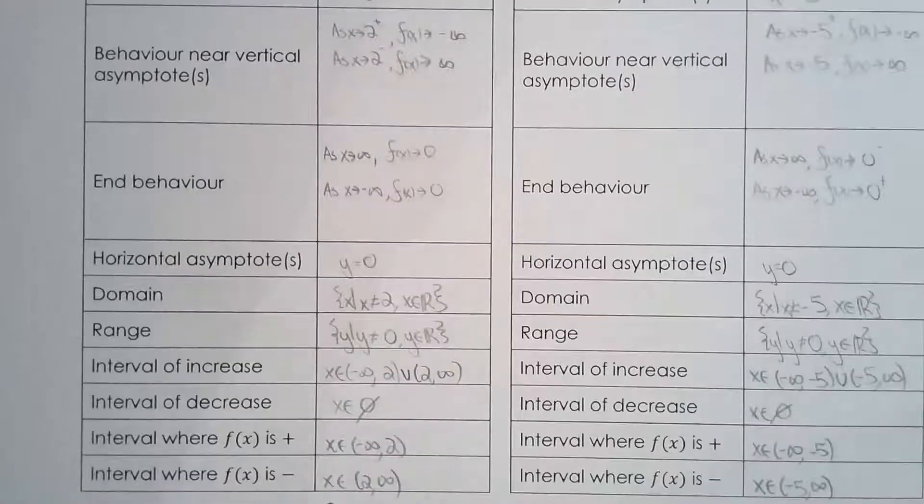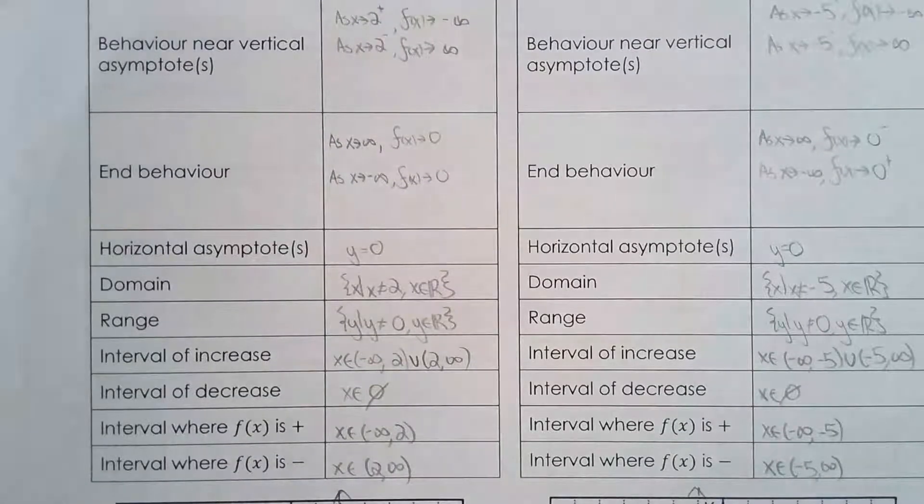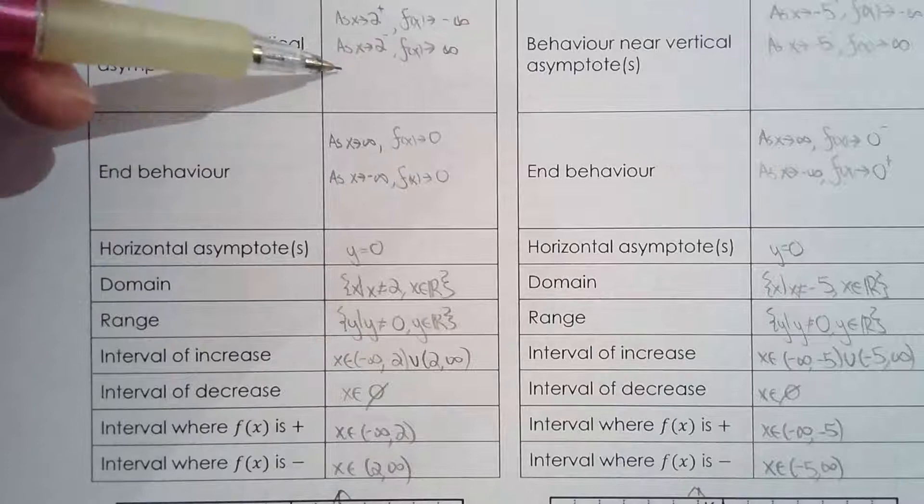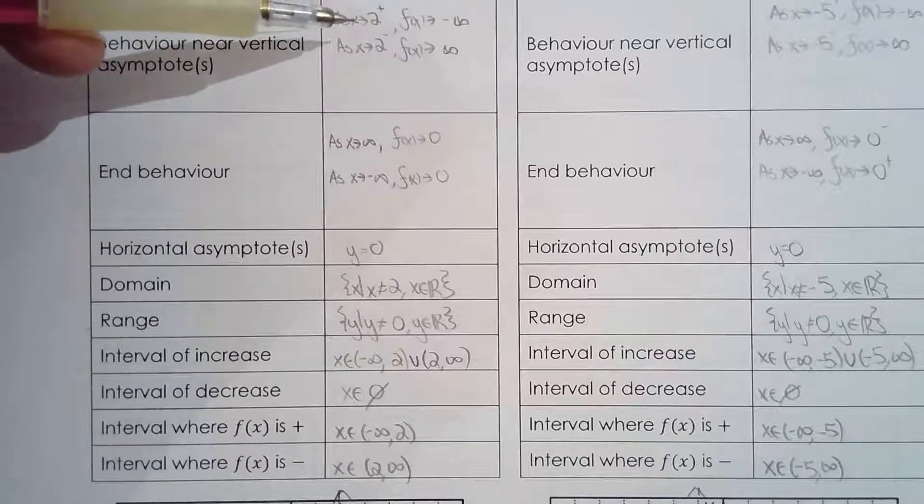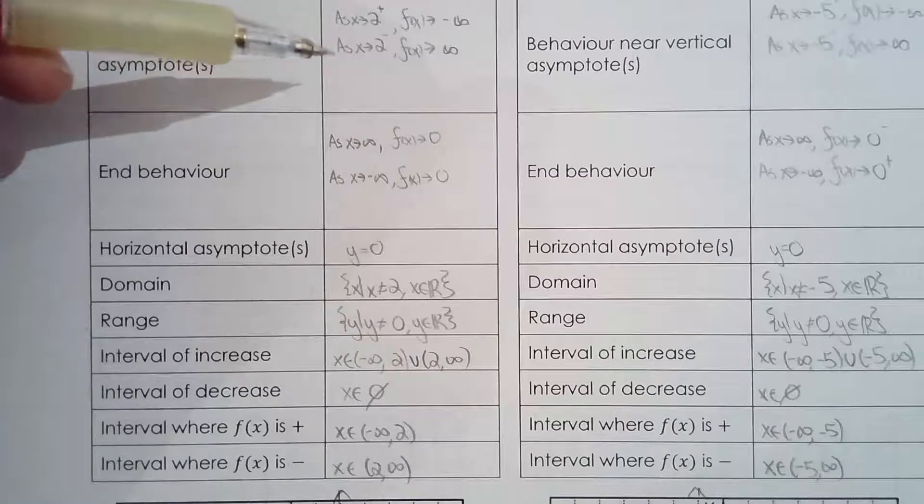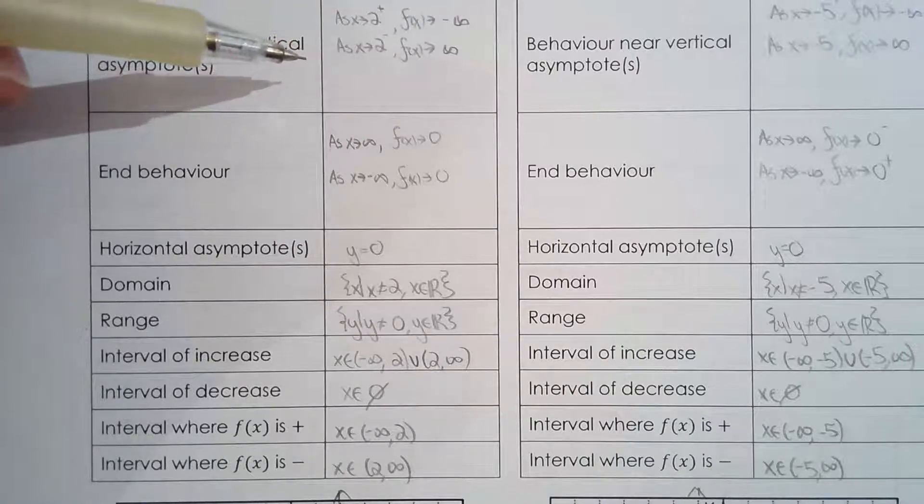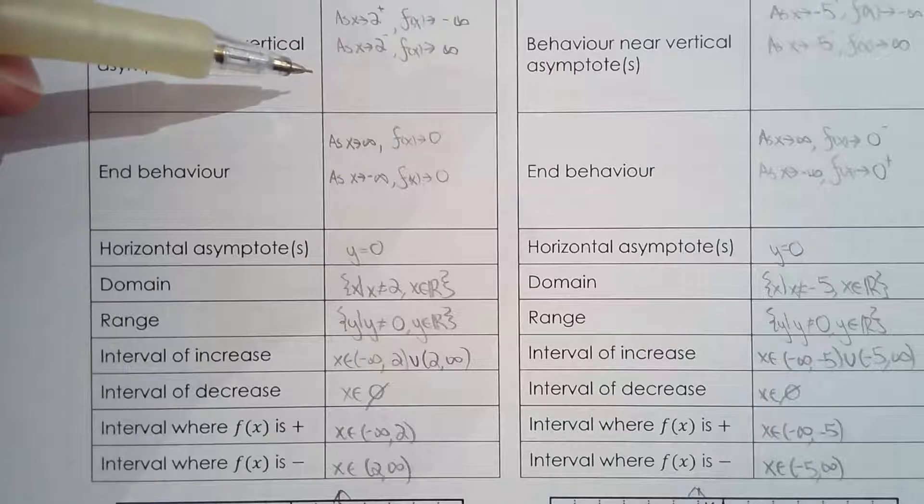I'll let you look at the table here. I found the behavior near the vertical asymptote. So, approach the vertical asymptote from the left side and the right side, and one of two things can happen. It either goes up towards positive infinity or down to negative infinity.